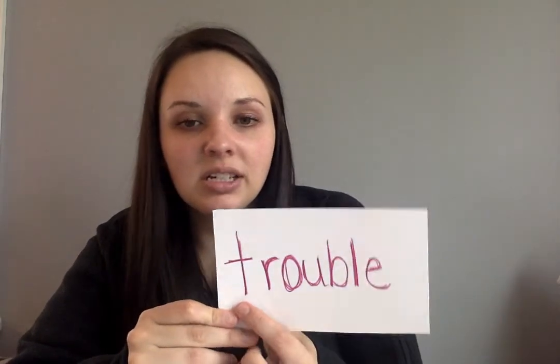This is our newest syllable type called consonant L-E. We're going to go over three trick words today. Our first trick word is TROUBLE. You'll notice it has the BULL at the end — you don't hear the E, just BULL. TROUBLE, quiet E. So we're going to go ahead and spell it: T-R-O-U-B-L-E, trouble.